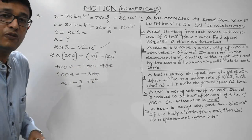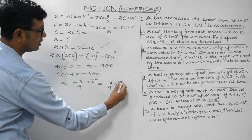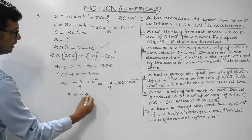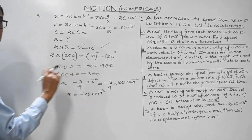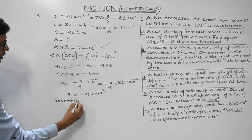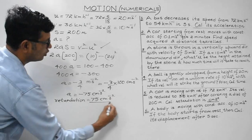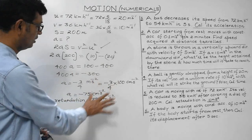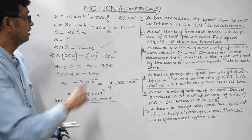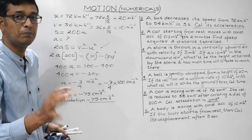The question asks for retardation in cm/s². Converting: -3/4 m/s² × 100 cm/m = -75 cm/s². Writing it as retardation (without the negative sign): retardation = 75 cm/s². This numerical is important for unit conversion — converting km/h to m/s, and then expressing acceleration in cm/s².